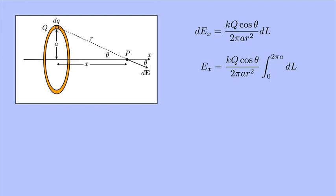Why from 0 to 2 pi a? Well, dl is the length, and I want to go all the way around the ring. So, I want 0 all the way up to 2 pi a. That's the circumference. Now, that's a very easy integral to do. The integral of dl is just l. And when I evaluate that from 0 to 2 pi a, that just becomes 2 pi a. And after a little simplification, I see that the electric field is k q cosine theta over r squared.